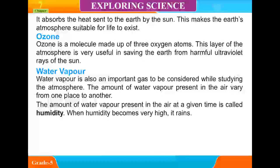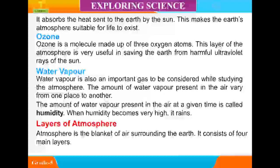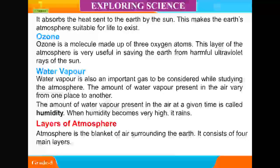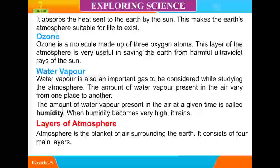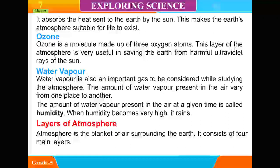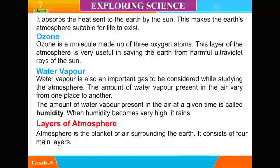When humidity becomes very high, it rains. The atmosphere is a blanket of air surrounding the earth. It consists of four main layers.